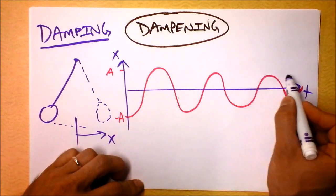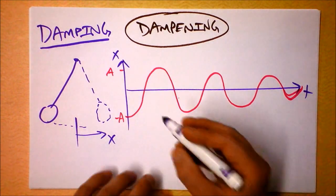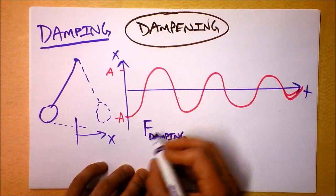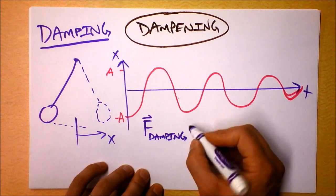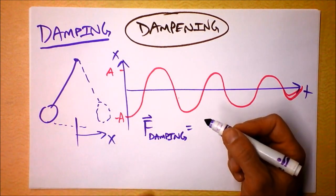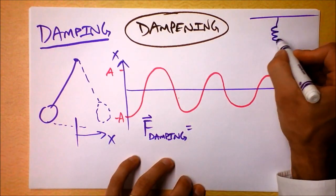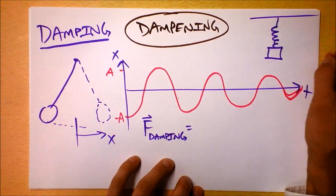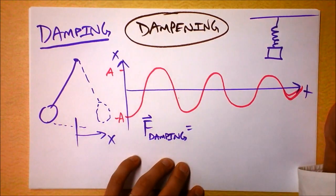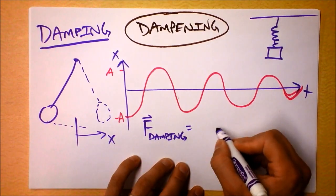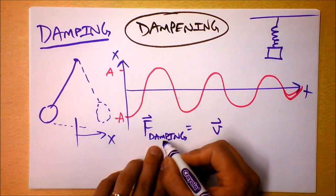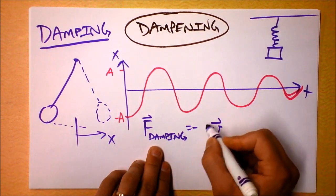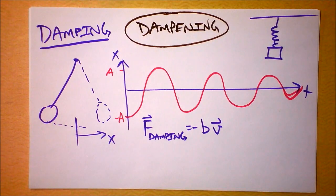Gradually energy is leaving the system because of friction, and usually we say that the force of damping is a force of friction. The force of damping doesn't depend on position. When do you think the greatest damping is happening for a mass on a pendulum, or for a mass on a spring? Probably not when it's at the top or bottom — friction can't act when it's at rest. So it depends on how fast we're going. The damping force is in the opposite direction of the velocity, and we can lump its magnitude into a variable b.